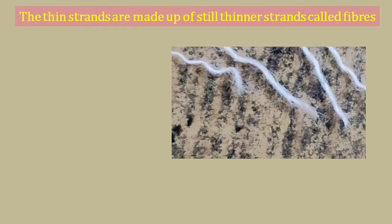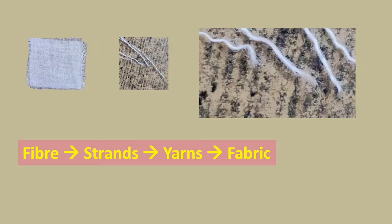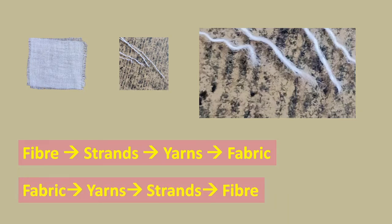A single strand is made up of still thinner strands that are called fibers. Fibers combine together to make strands. Strands combine together to make yarns, and yarns are arranged to make fabric. So a fabric is made up from yarns, yarns are made up from strands, and strands are made up of fibers.